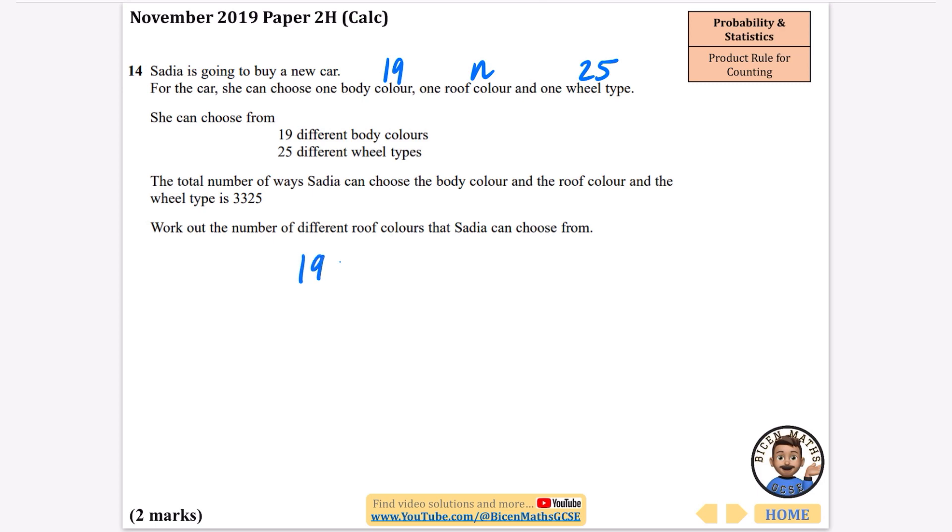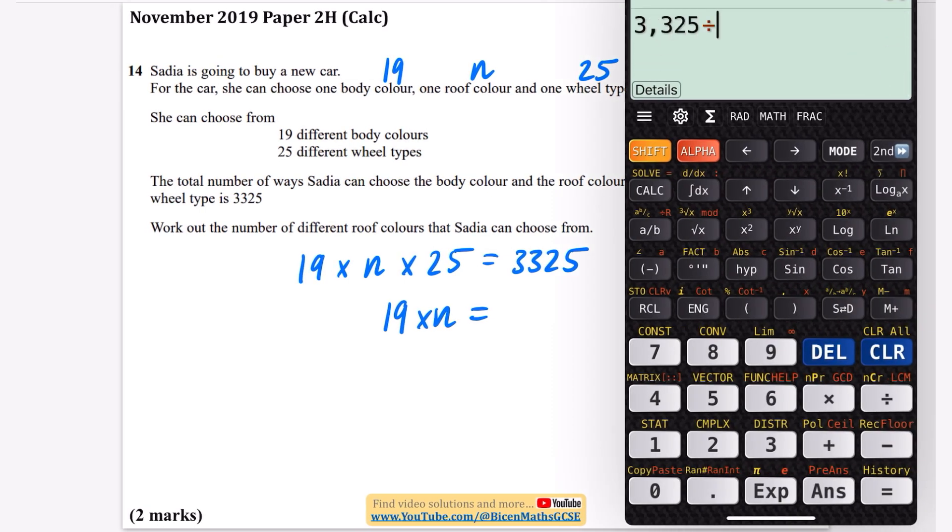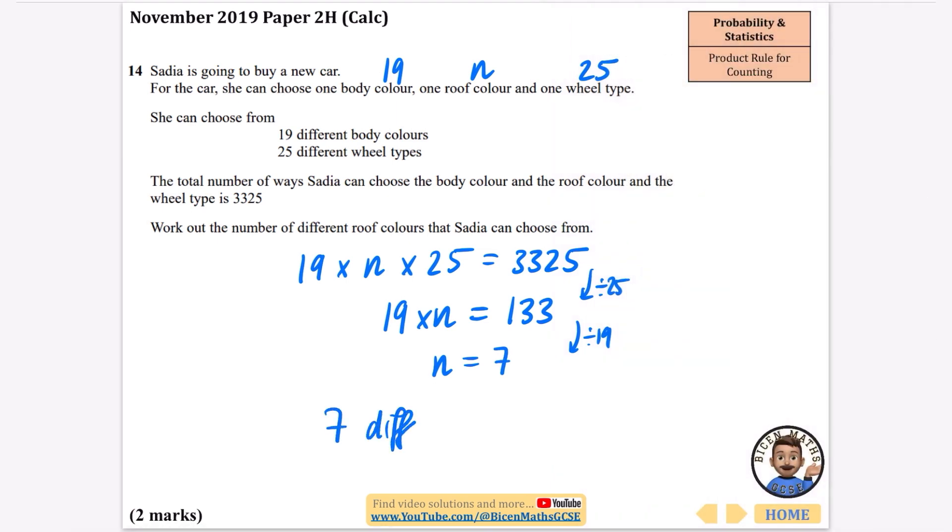So we know that if you do 19 times N times 25 that gives us 3,325. So I'm going to find out what N is by dividing by 25 and then dividing by 19. So 3,325 divided by 25, that is 133. And now I'm going to divide by 19. When I do 133 divided by 19 I get that the answer is seven. So there are seven different roof colors to choose from.